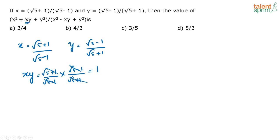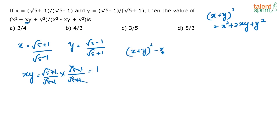Now, how can you rewrite the expression? The numerator x² + xy + y² can be written as (x+y)² - xy, correct? Similarly, the denominator x² - xy + y² is (x+y)² - 3xy, because expanding (x+y)² gives 2xy, and 2xy - 3xy = -xy. Since xy = 1, I just need to find x+y.